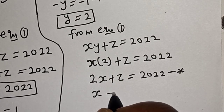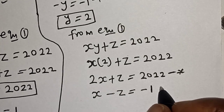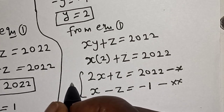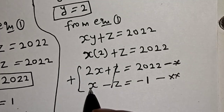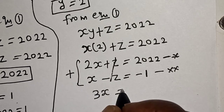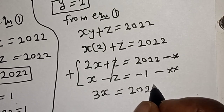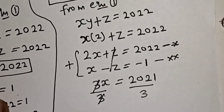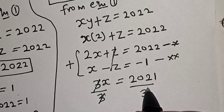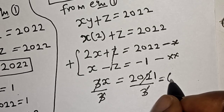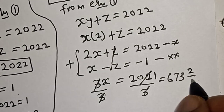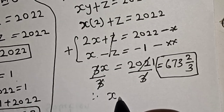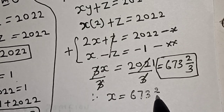Now let's solve equations star and double star simultaneously. Adding them together cancels z, giving 3x equals 2021. Dividing both sides by 3: x equals 2021 over 3, which is approximately 673 and 2 over 3. That is not a whole number.